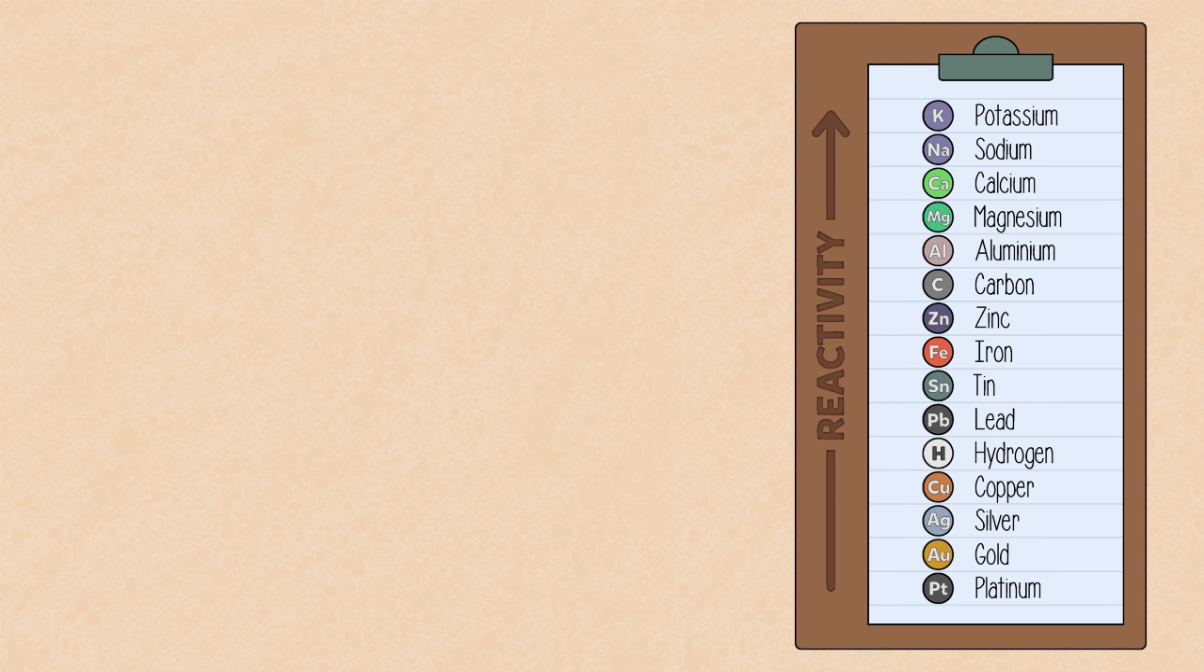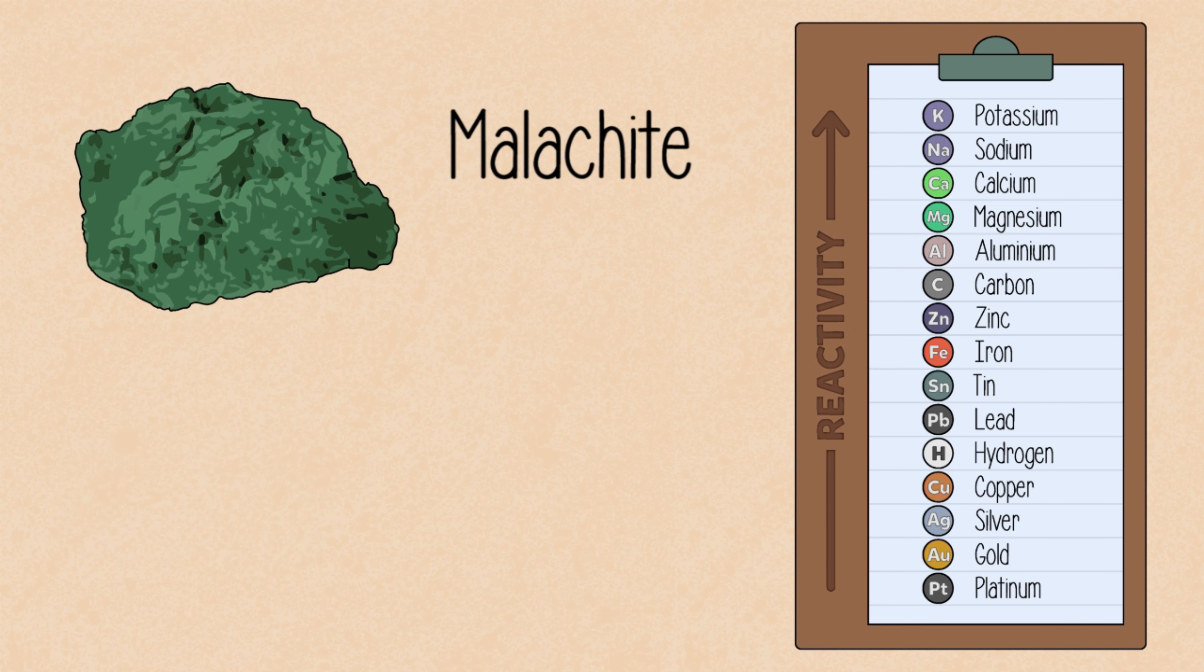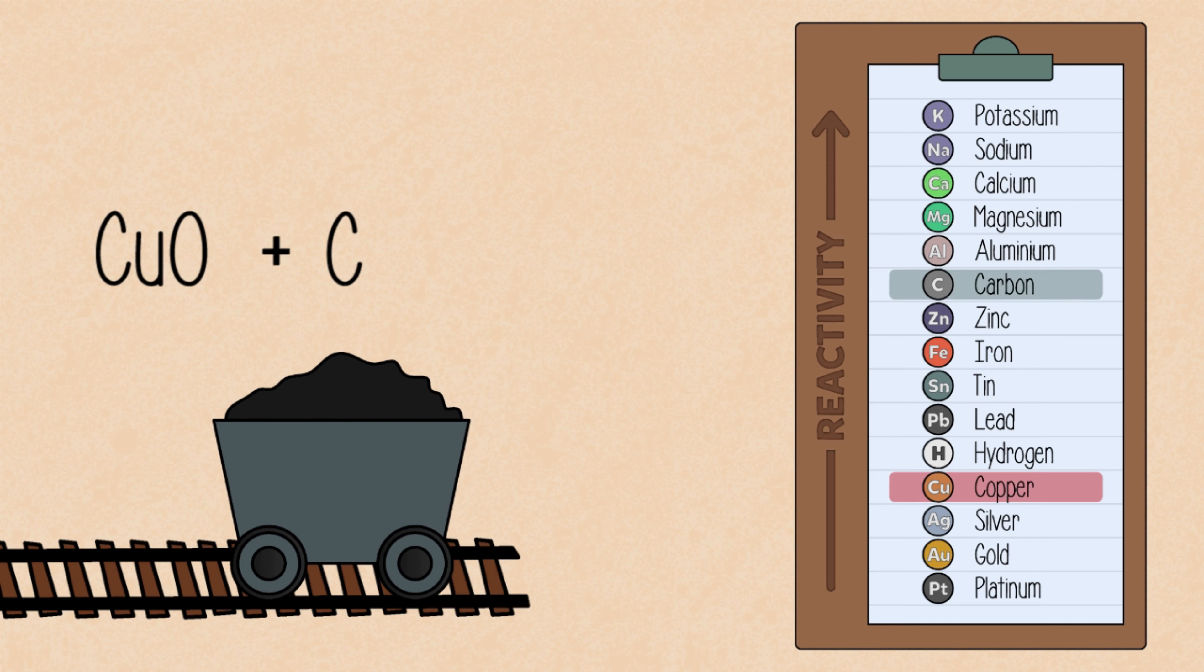This series is also important when it comes to the extraction of metals from their ores. Malachite contains a high percentage of copper carbonate. Heating copper carbonate decomposes it to copper oxide. When you add charcoal, a form of carbon, this enables the extraction of copper metal as the series tells us that it is more reactive than copper.